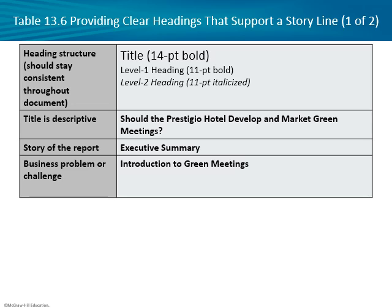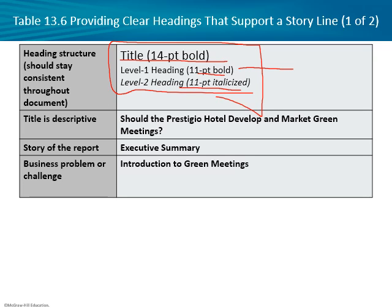For headings, the book recommends 14-point bold for level one headings. My advice with Word or PowerPoint — don't manually mess with font sizes. Instead, highlight your heading, go to the Styles section, and select 'heading level one' or 'heading level two' from the dropdown menu. This way, if you later decide you don't like the look, you can change all level one headings with just one click instead of going through each one individually.